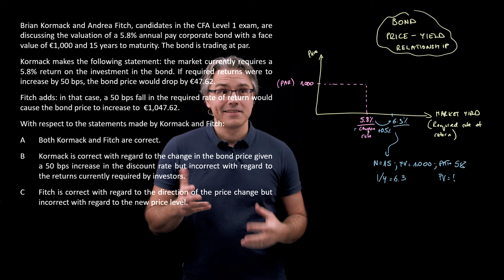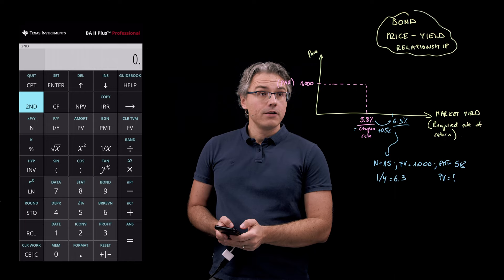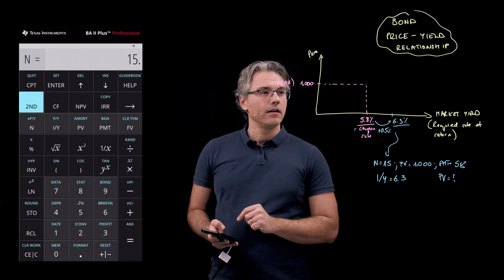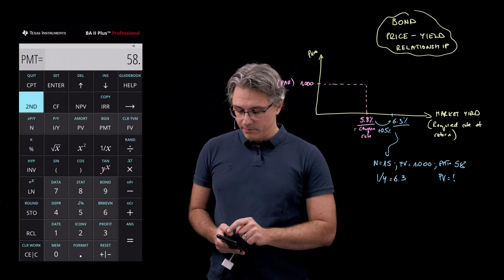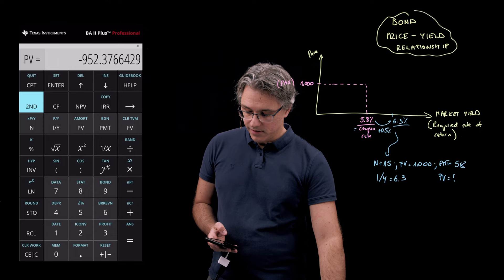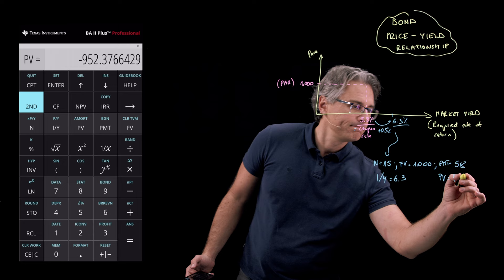So, over to the time value of money worksheet. Let's clear it. So, second followed by the FV key. And I've got 15 for N. I've got 6.3 for I over Y. PV is what I'm looking for. 1,000 for FV. And 58 for PMT. Let's compute the PV. Okay. It shows an answer or a result equal to 952.38. That's the new value.